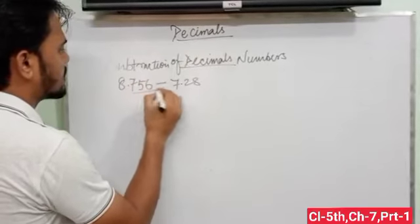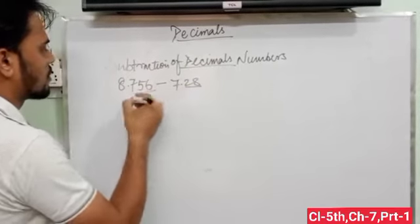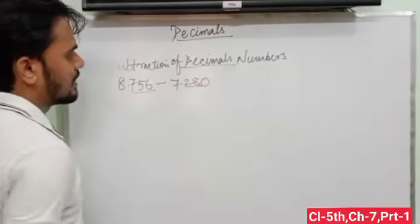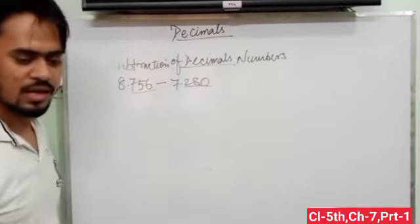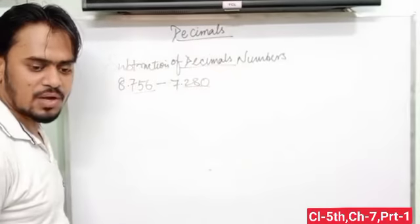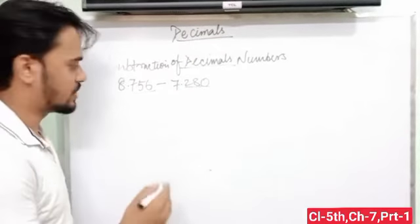There are 3 digits and there are 2 digits. So convert this one into like decimals. So now these are like decimals. And next step: write the decimal number one below the other, keeping the decimal point directly below each other.